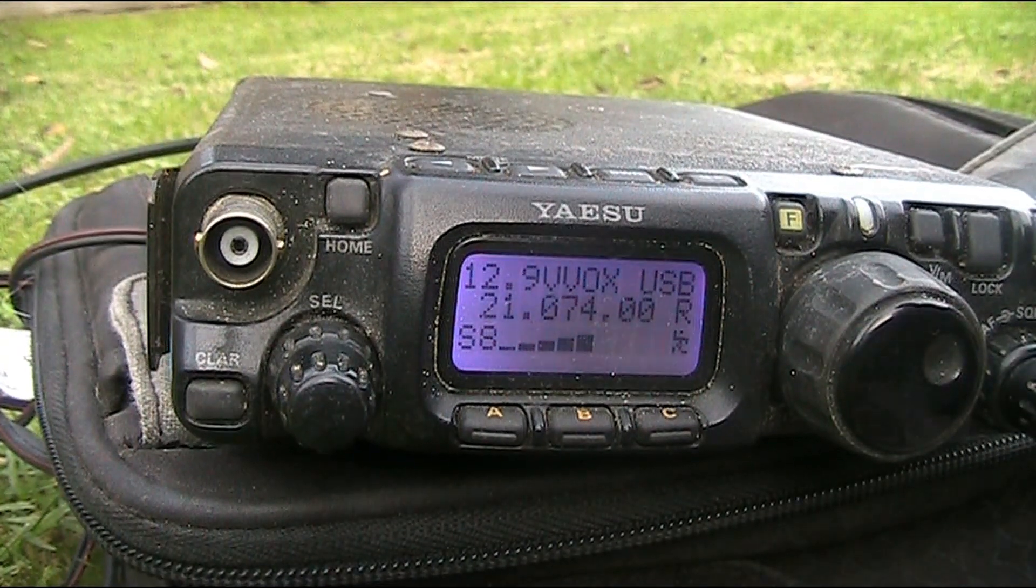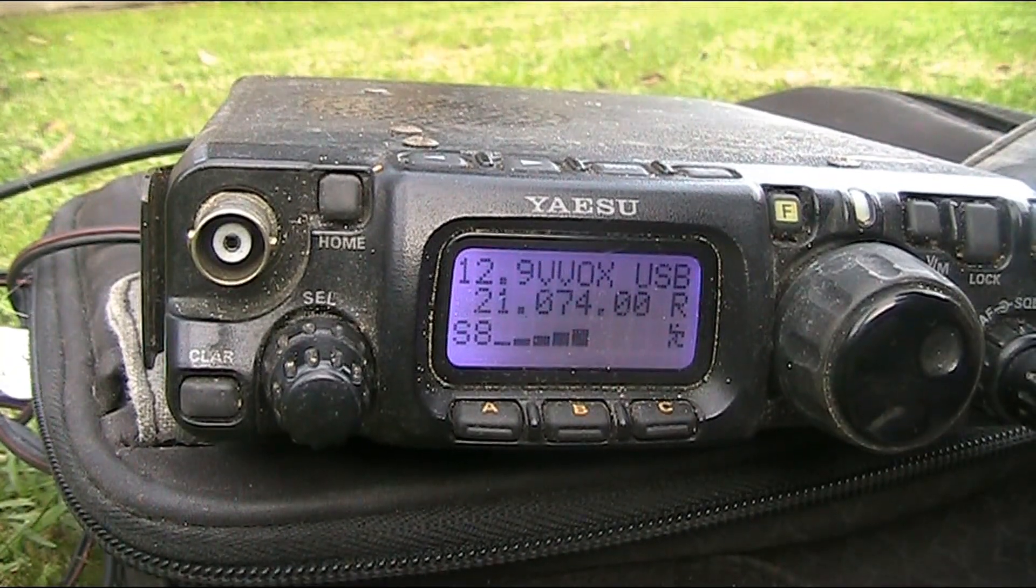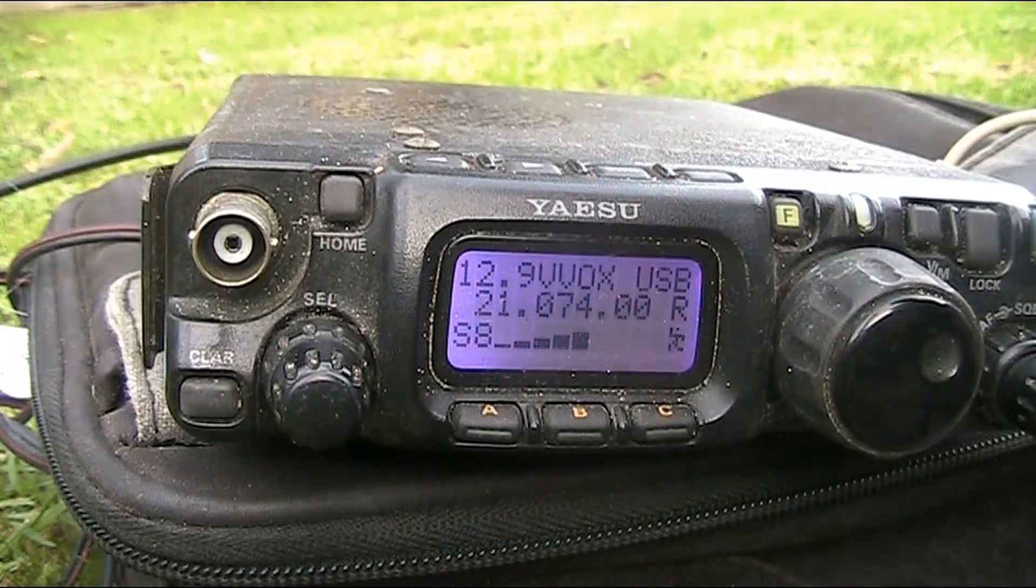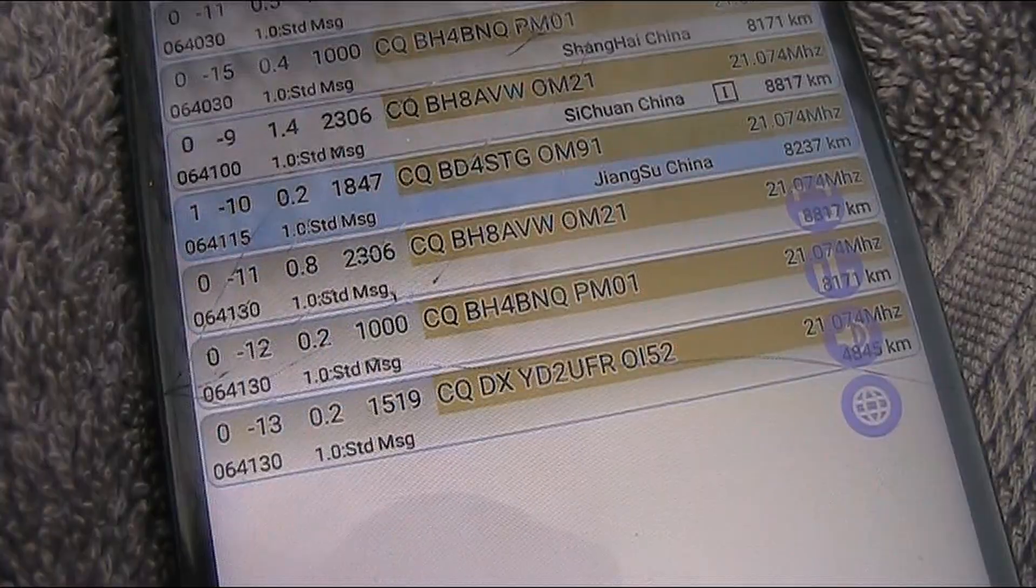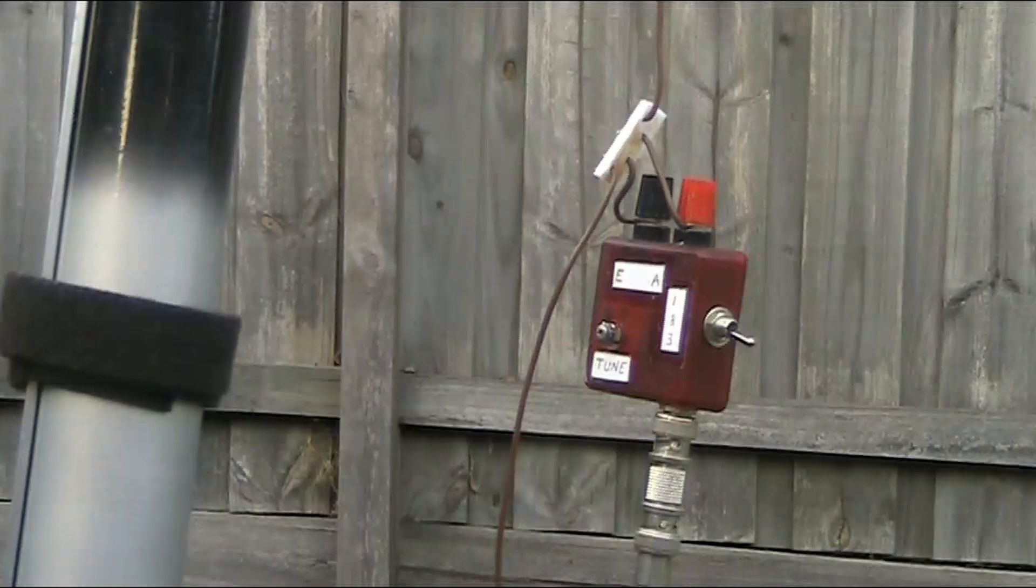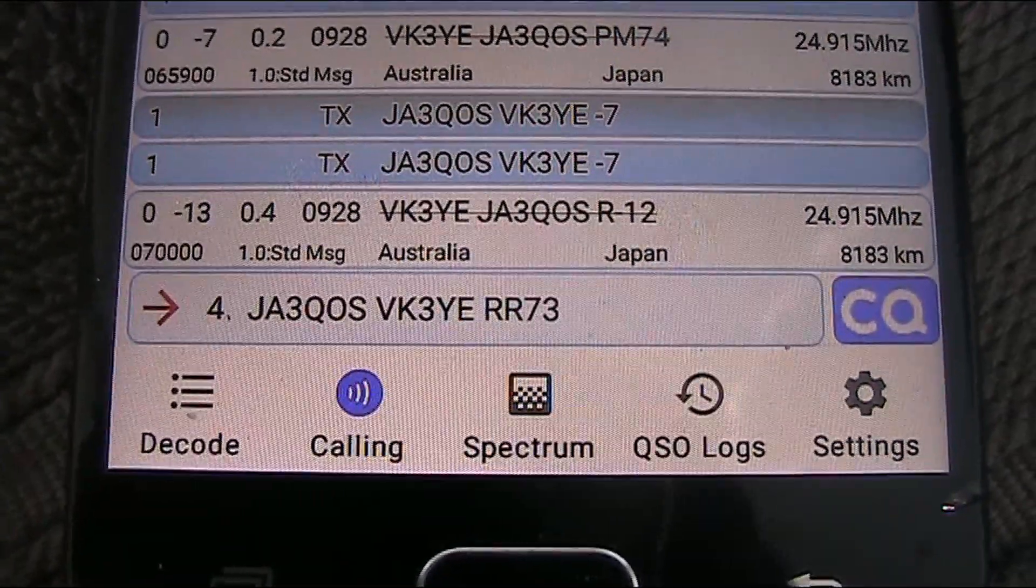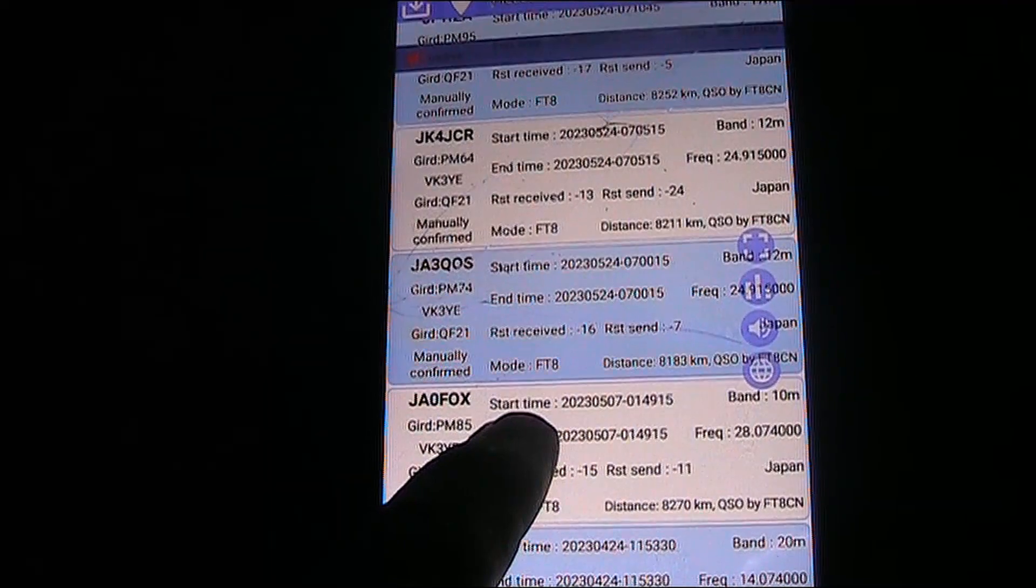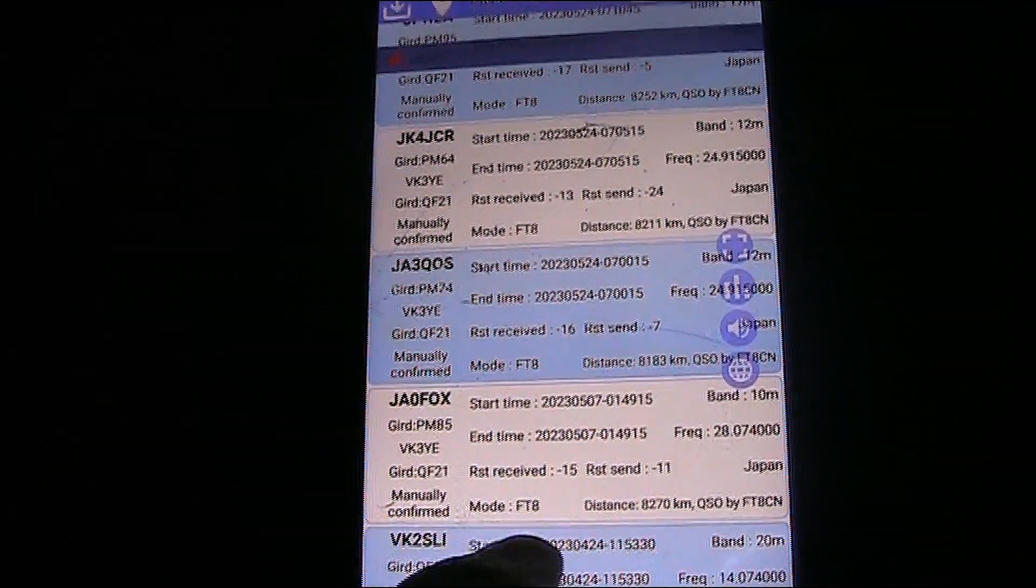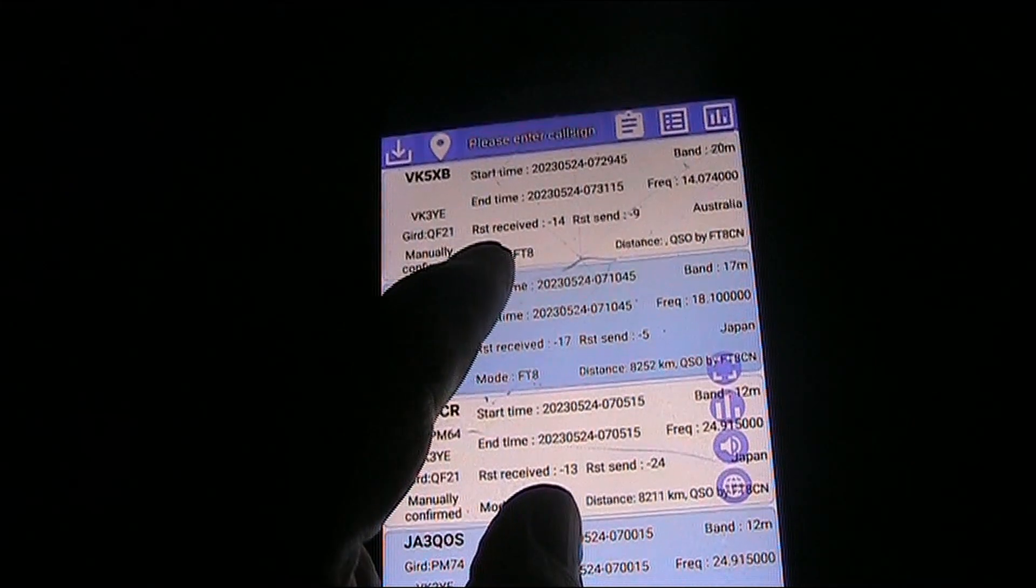Next thing I'll do is try some FT8. So I've got the FT8CN app, which works on Android. I've done a previous review of it. And we'll see if I can make some contacts. And there's a contact with JA-3Q-OS. I wasn't out here for very long, but got four contacts. Two on 12 meters to JA. Another JA on 17 meters. And VK5 on 20 meters.